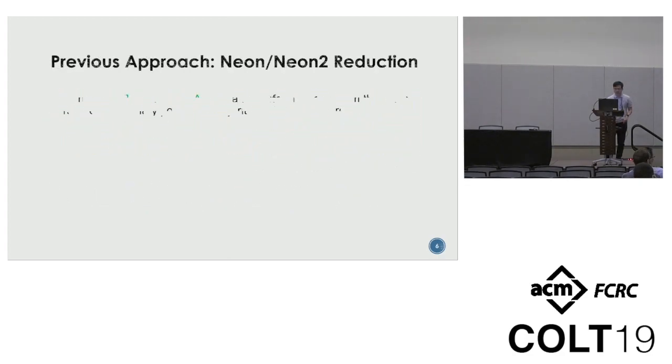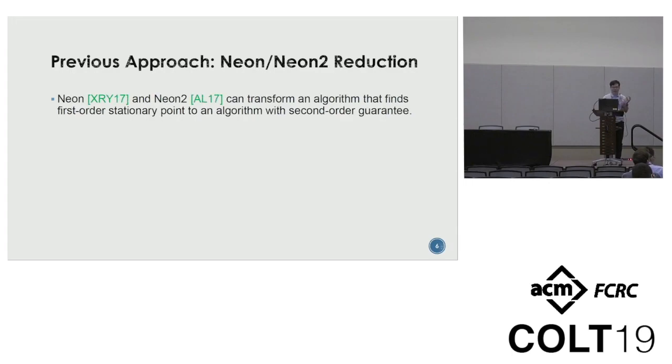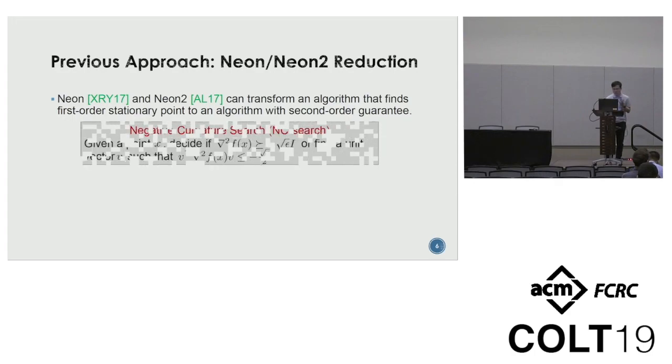What's the previous approach? There exists a general reduction that can transform any algorithm that finds first-order stationary point to an algorithm with second-order guarantee. This reduction relies on negative curvature search subroutine, also called NC search. Given a point x, this subroutine can determine whether the Hessian is almost PSD. If not, it can return a decreasing direction, which is the approximate minimum eigendirection. Basically, if we get stuck at a saddle point, we call this subroutine. The subroutine tells us the decreasing direction, and we go along this direction to escape the saddle point. This reduction can be applied to many algorithms. In particular, this reduction can combine with SVRG, and the guarantee is just slightly worse than our bound.